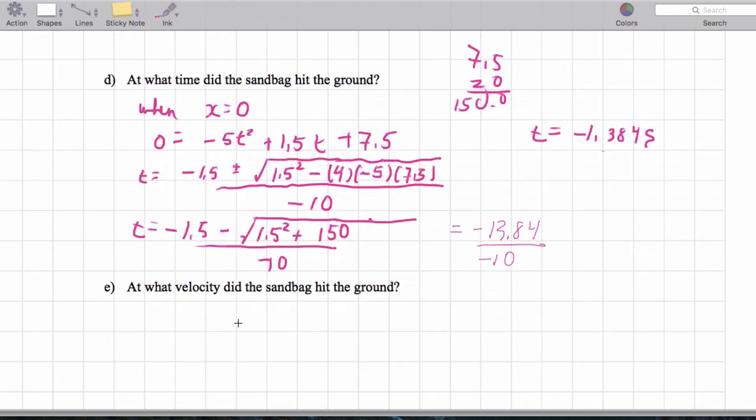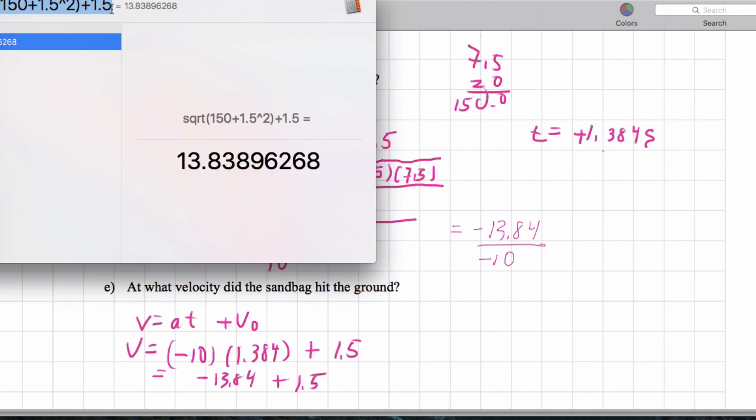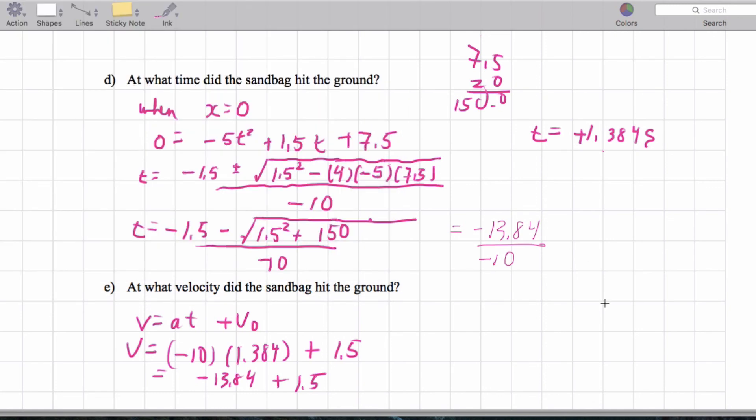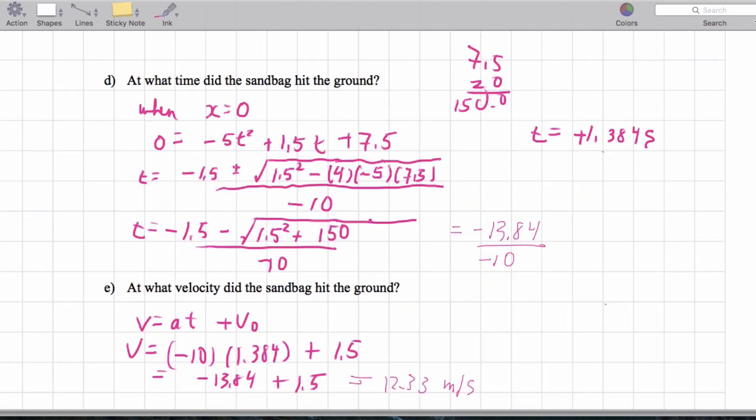Now we want to know what velocity the sandbag hit the ground at. So we're going to basically say V is aT plus V naught. V is going to be negative 10. T is going to be, I'm sorry, this should be positive 1.384 for the time. And V initial was positive 1.5. So that's going to give me negative 13.84 plus 1.5. So that's going to end up giving me about 12.33 meters per second. So that is question number five.